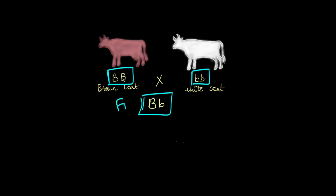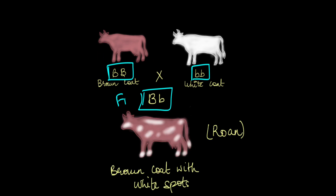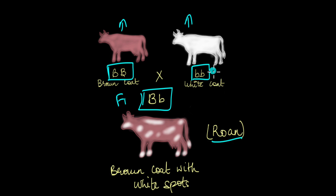But how do you think the coat color of the offspring would look? It would be neither completely brown nor completely white because both phenotypes are expressed, which is why it would have a brown coat with white spots — also known as roan. So the coat color of cattle is another example of codominance.